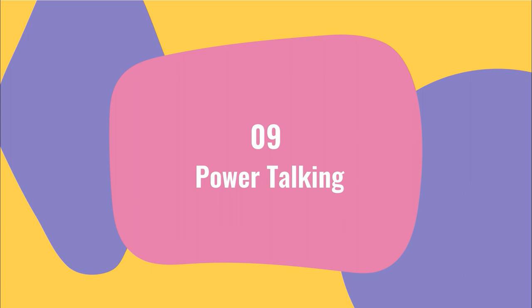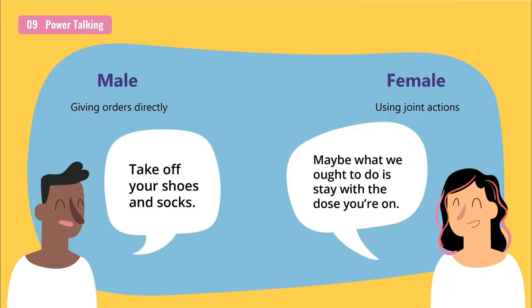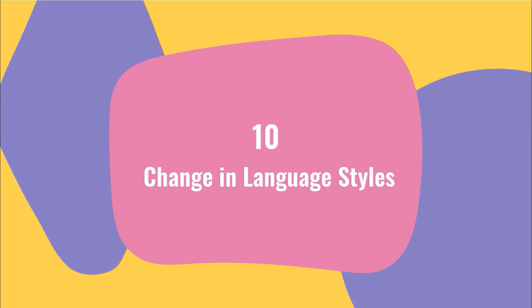Now we move on to power talking. Please take a look at the dialogue between speaker A and speaker B. Powerful speakers typically control the topic, interrupt others, and demand explicit explanations. The powerful speaker — in this case speaker A — dominates the conversation and flattens other speakers' confidence. Power talking is used by either sex but is used by males more. In a study of doctor-patient interaction in the USA, men used explicit commands in about one-third of directives — for example, 'Take off your shoes' — whereas women prefer using joint actions, for example, 'Maybe what we ought to do is stay with the dose you're on.'